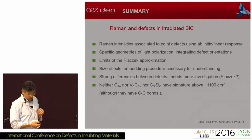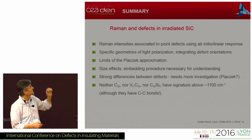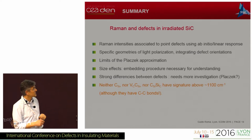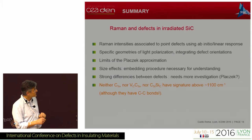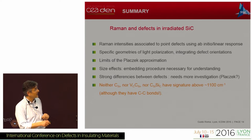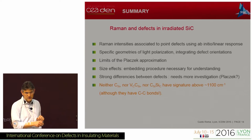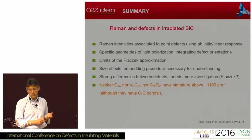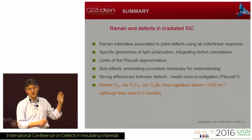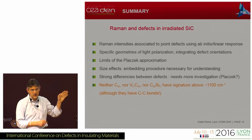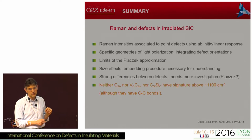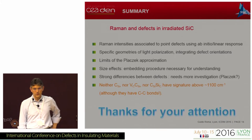In conclusion: neither carbon anti-sites, nor the VC-CSi complex, nor anti-site pairs have any Raman signature above 1100 cm⁻¹, despite having carbon-carbon bonds. Therefore, these cannot be responsible for the experimentally observed peaks at 1400–1500 cm⁻¹. Thank you for your attention.